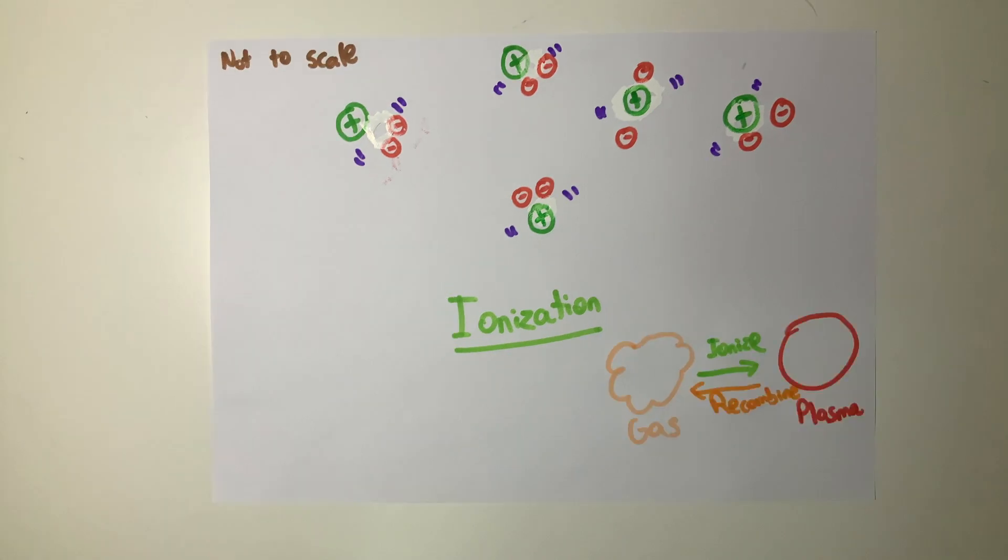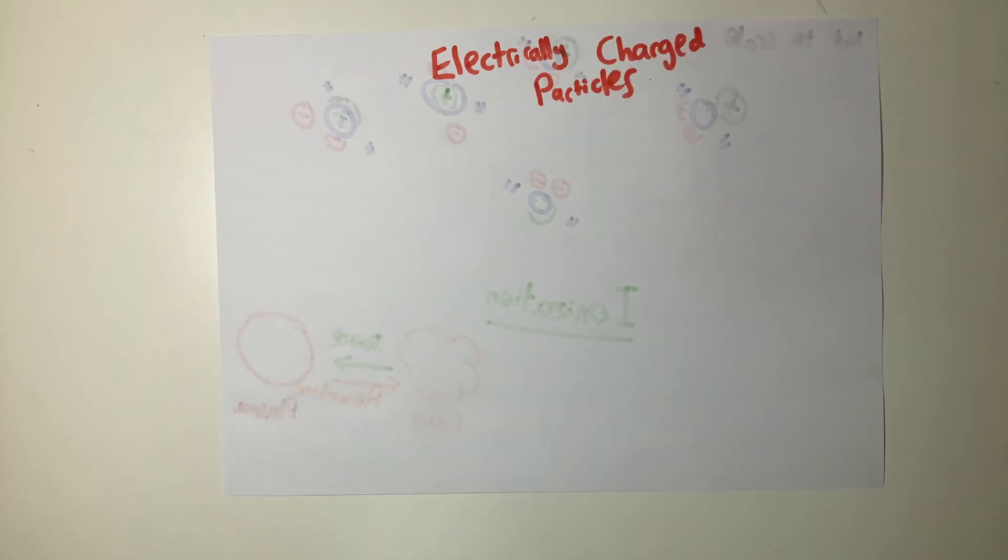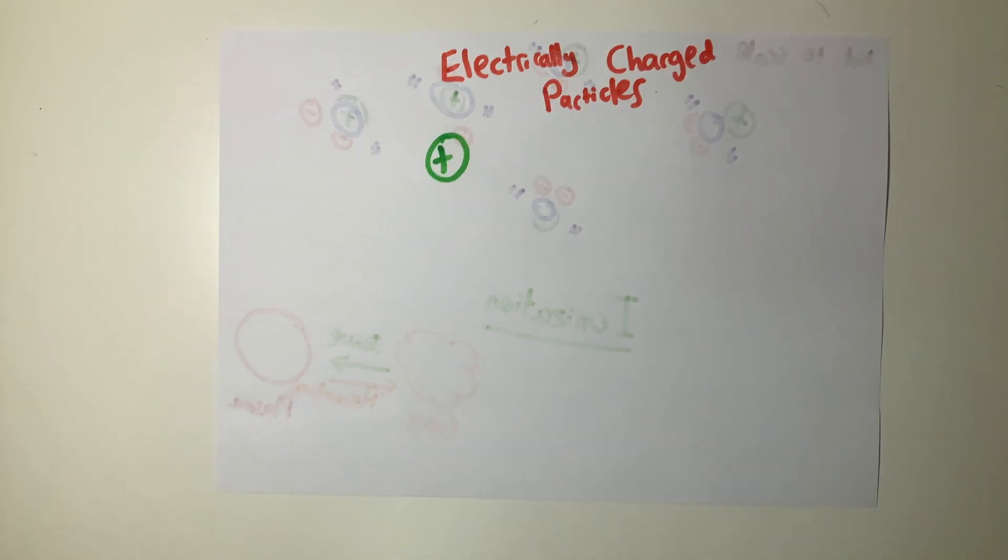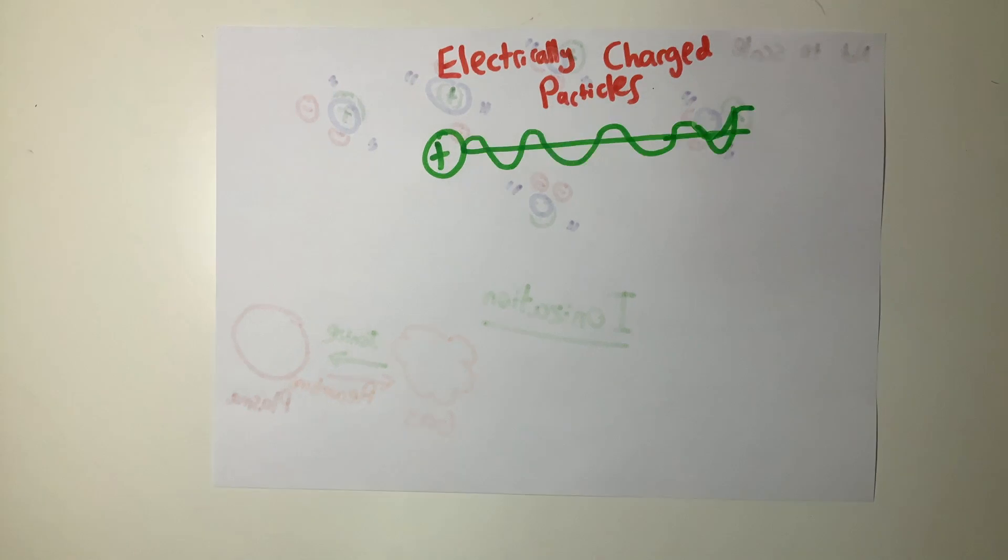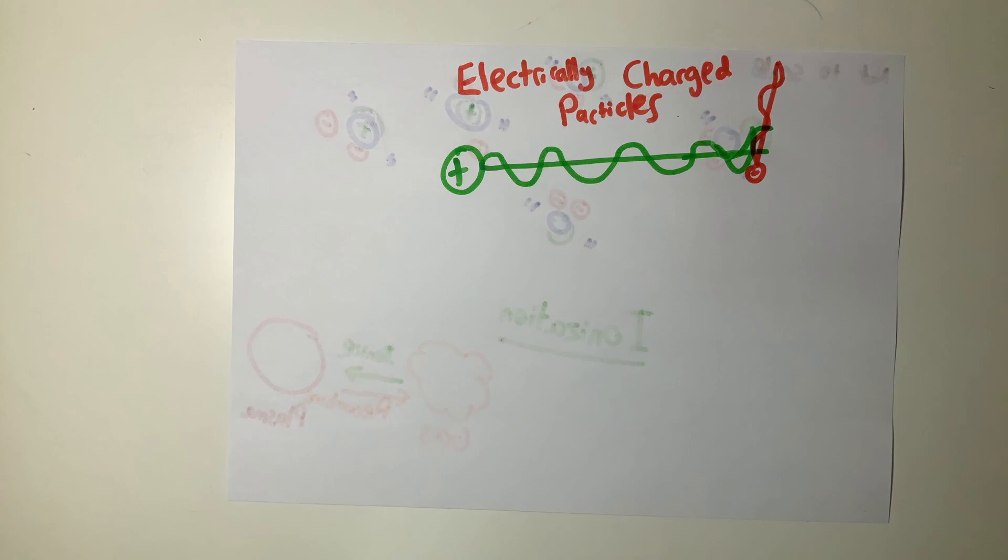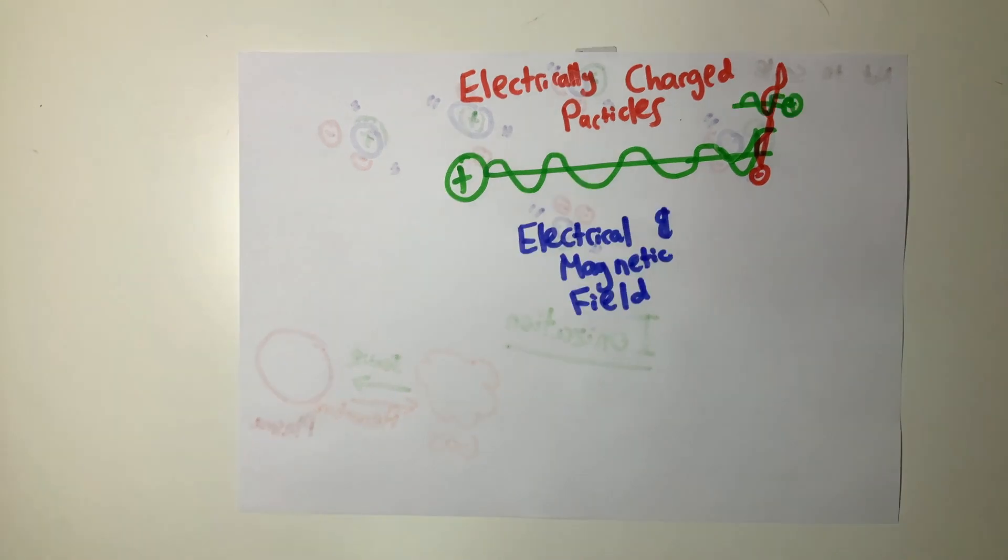Plasma is a state of matter with fascinating properties. Due to the electric charge of its constituent particles, the movement of the particles creates electric and magnetic fields that affect the movement of other particles. In a sense, plasma is an amorphous blob of self-interacting matter.